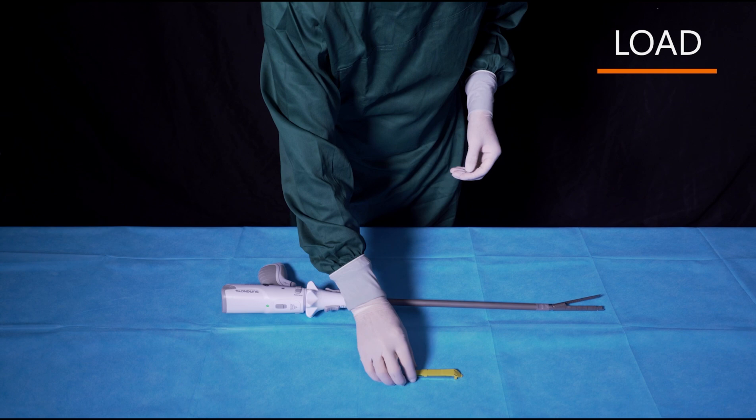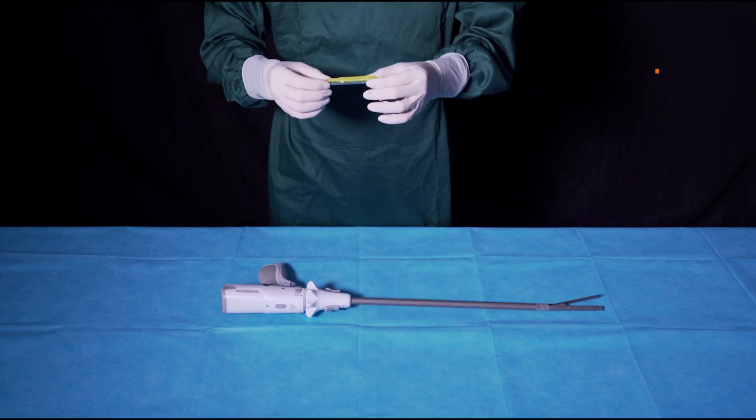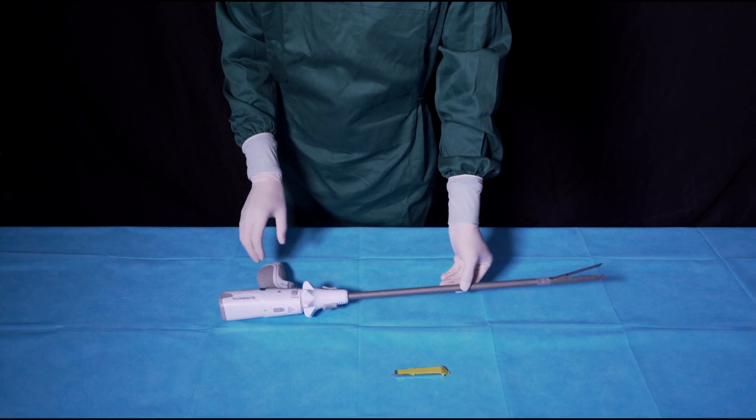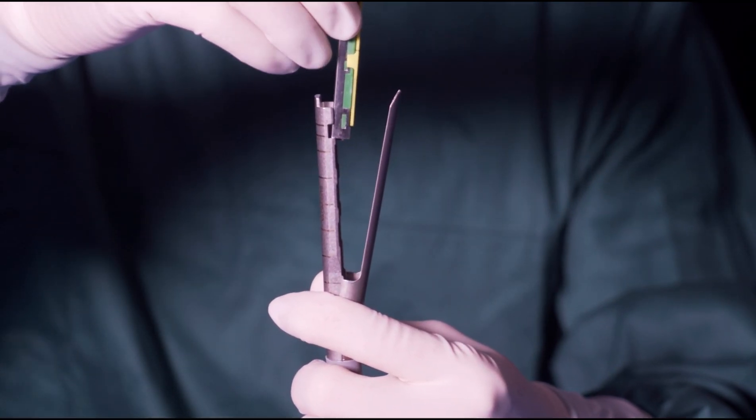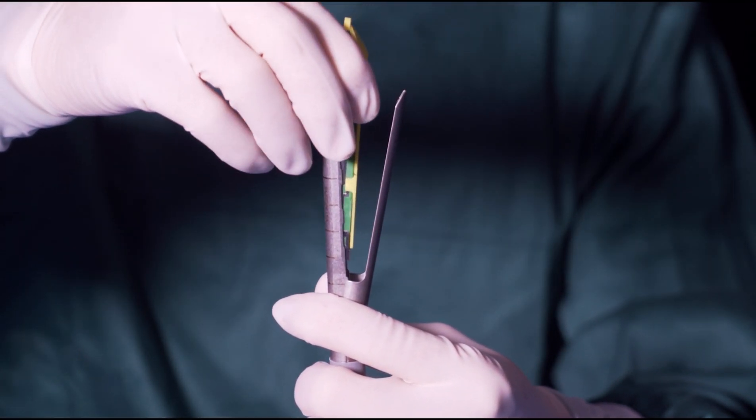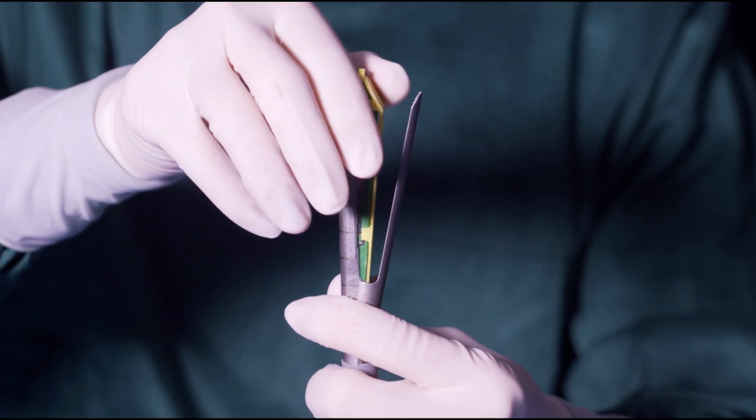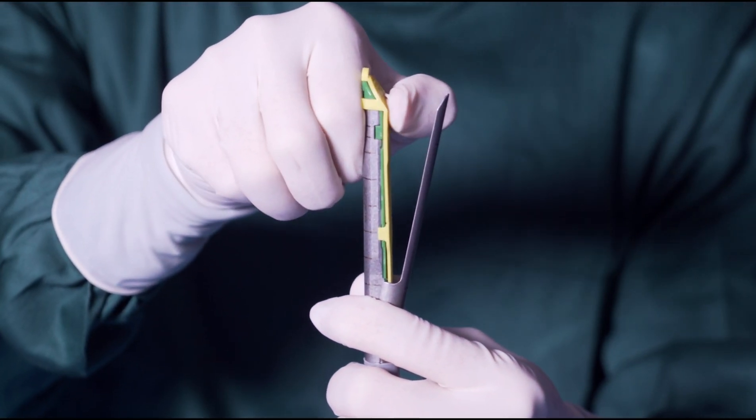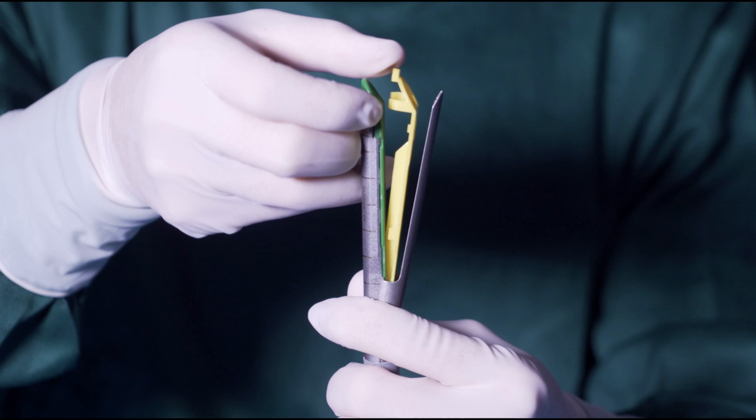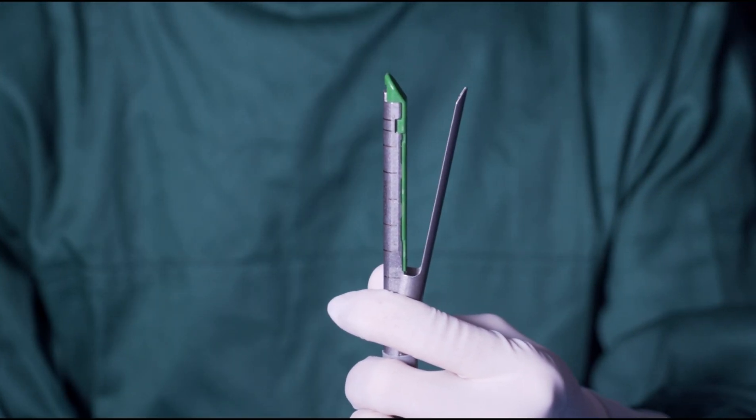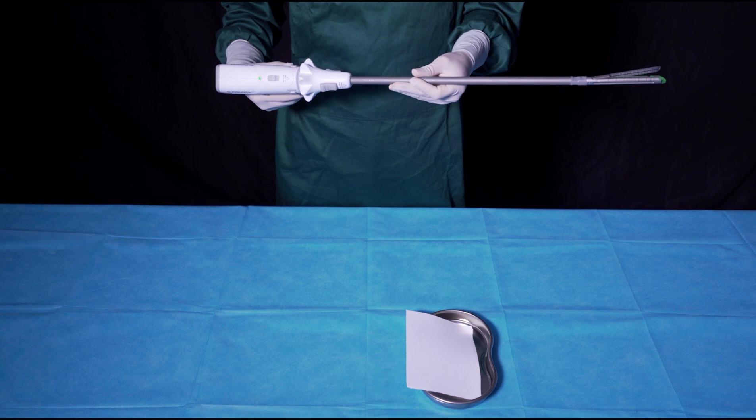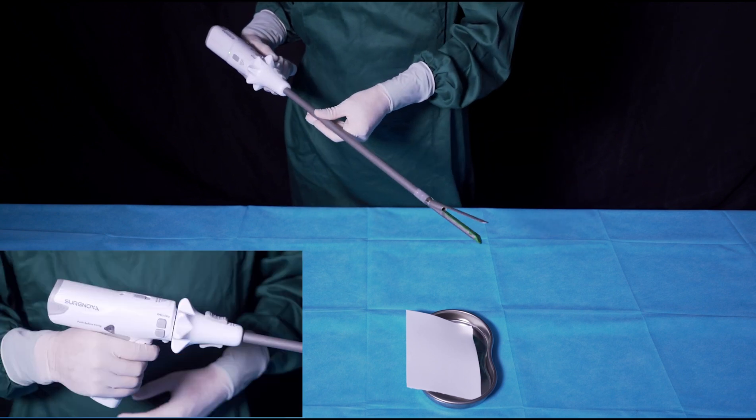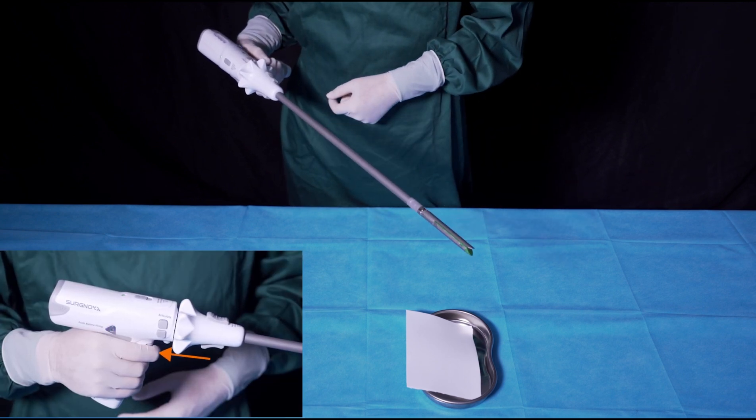Ensure that the staple, retaining cap, and sled are intact. Make sure that the jaws are open. Slide the reload into the bottom of the reload cartridge from the middle unit. The reload alignment tab is locked in the slot. Then remove the protective cap after hearing a click sound. After confirming that the reload is positioned correctly, long press the close button to close the jaws.